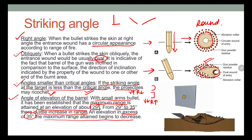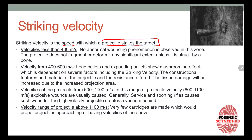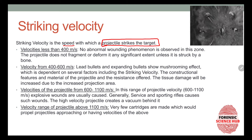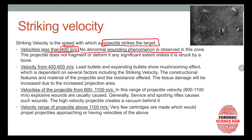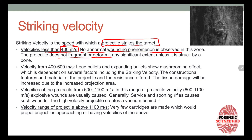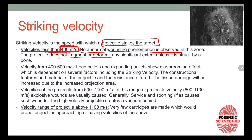Next we talk about striking velocity — the speed with which a projectile hits the target — which also affects the wounding ability. If the velocity is less than 400 meters per second, we see a normal kind of wounding with no abnormal wounding phenomena. Projectiles do not normally fragment or deform unless they hit hard objects like bone. In this range we see normal wounding phenomena.